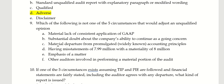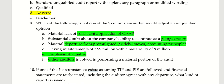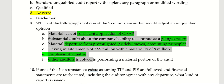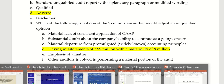Which of the following is not one of the five circumstances? You'd need to have a clear idea of our GECTO. So when there's a going concern issue — that's a yes, that's a G. Lack of consistent application of GAAP — yes, definitely, that's your C. Other auditors — that's your O. Emphasis of a matter — yes. Material departure from promulgated widely-known accounting principles — that's yes as well. So the only one is: misstatements of 7.99 million with a materiality of 8 million. That would be your correct answer — that's not a circumstance where you would adjust the opinion. That would be an unqualified opinion because they have misstatements of 7.99, but that's just under our materiality.